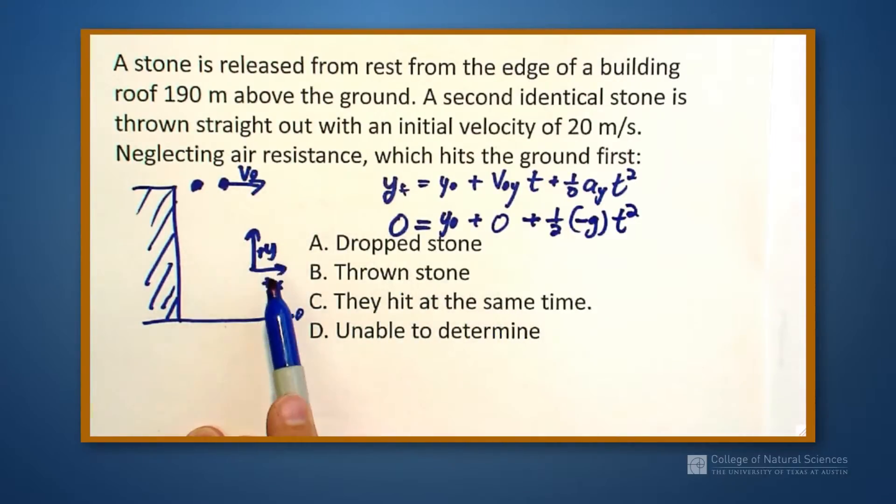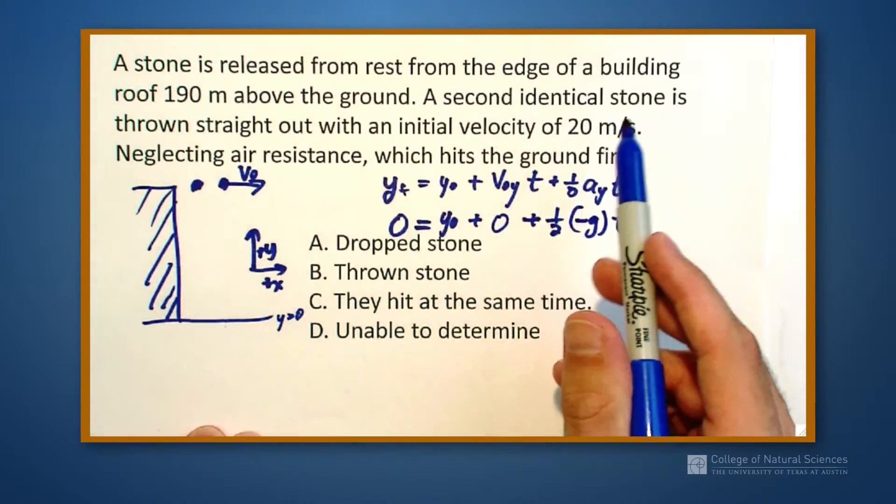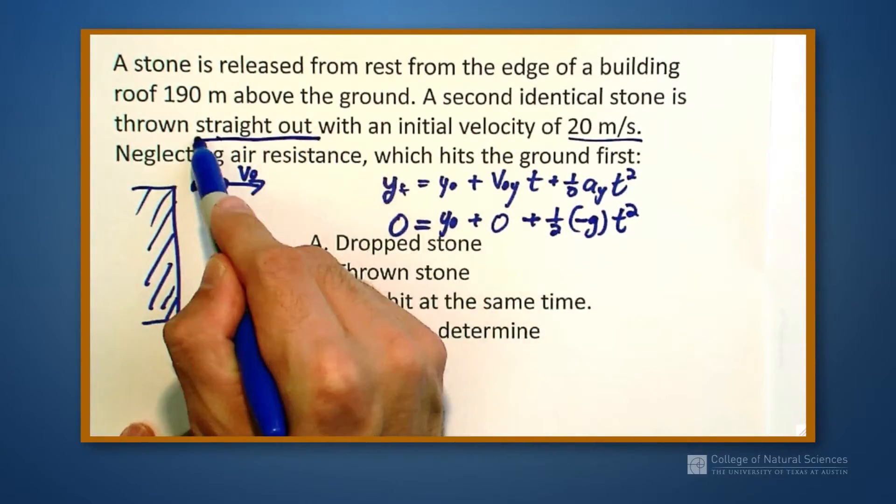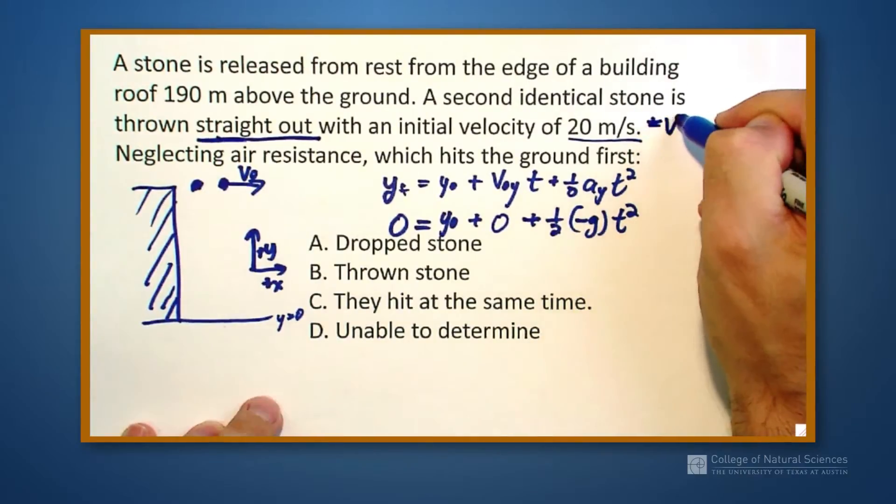Well, if we go back and look at the thrown one, it's thrown in a particular way. Thrown with 20 meters per second straight out. So this is a v naught x.